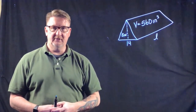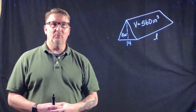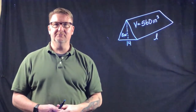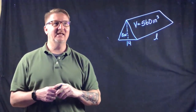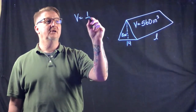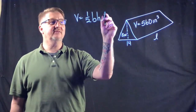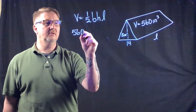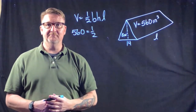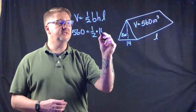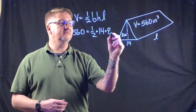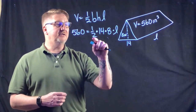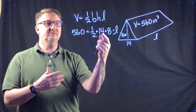In the last example we have a triangular prism and we need to find the missing length, given the base, height, and volume. We go back to the same formula: volume equals one half times base times height times length. Plugging in: 560 equals one half times 14 times 8 times L.